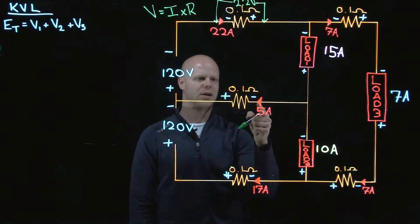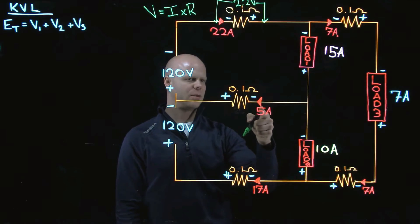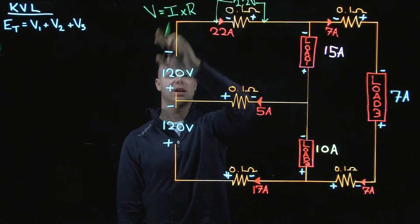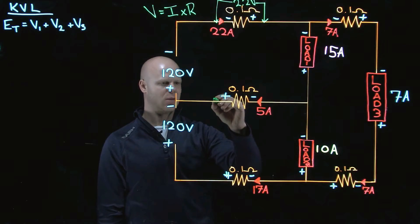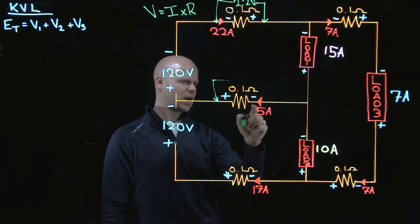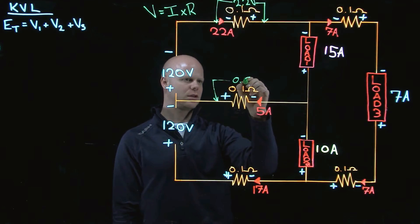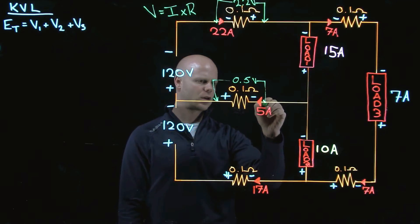I'll just work my way down. If I have 5 amps and 0.1, still utilizing this formula V equals I times R, I will have half a volt, 0.5 volts across this component.